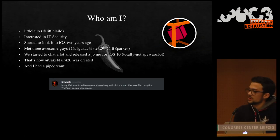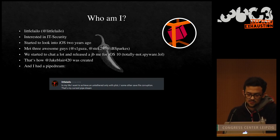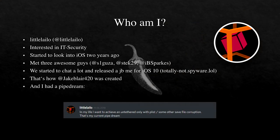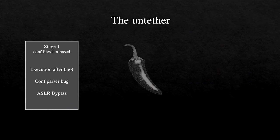I had this pipe dream that in my life I really want to achieve an untethered jailbreak using only some sort of plist or other safe file corruptions. There are different kinds of jailbreaks — the most common modern kind are semi-untethered, where the user connects their device to a PC, sideloads an app, and on each reboot has to press a button to re-jailbreak. With an untethered jailbreak, the jailbreak gains persistent installation and automatically jailbreaks the device on each boot.